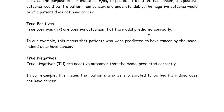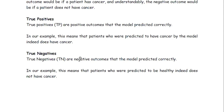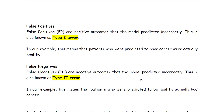To summarize: true positive means the model predicted correctly that a person has cancer and that person really does have cancer. True negative means the model predicted correctly that the person doesn't have the disease. False positive (Type 1 error) means the model predicted the person has cancer but the person is actually healthy. False negative (Type 2 error) means the model predicted the person is healthy but they actually have cancer.